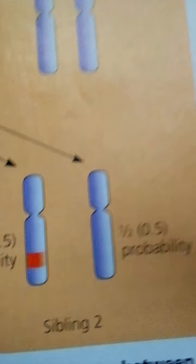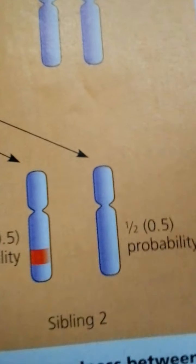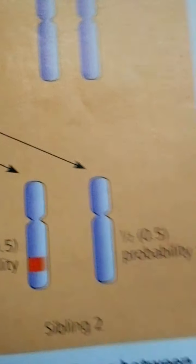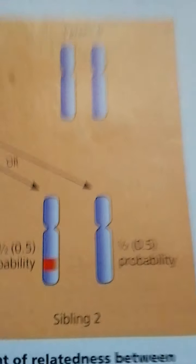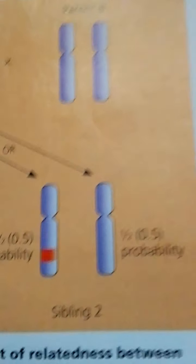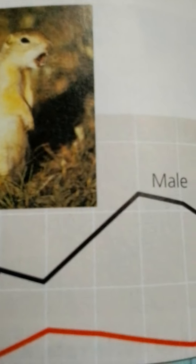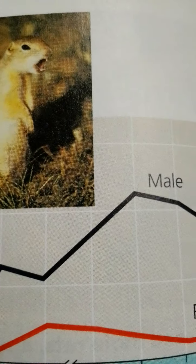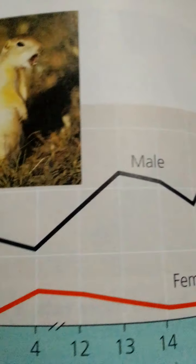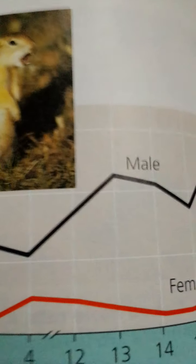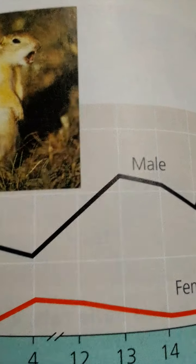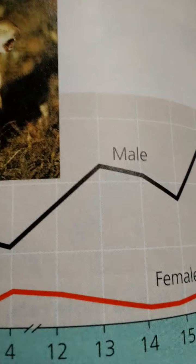We can now use values of B, C, and R to evaluate whether natural selection would favor the altruistic act in our imaginary scenario. Natural selection favors altruism when the benefit to the recipient multiplied by the coefficient of relatedness exceeds the cost to the altruist.